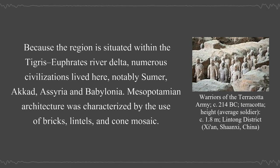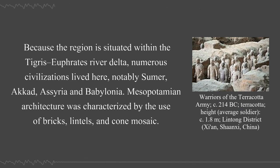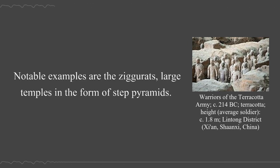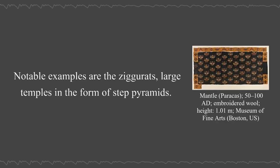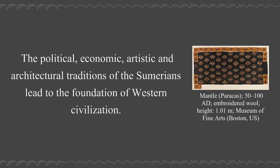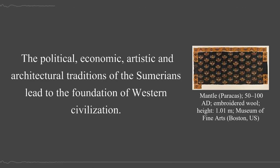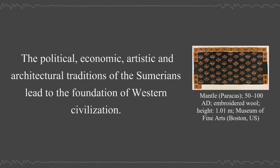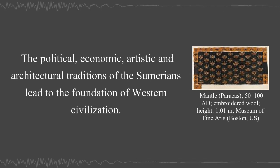Mesopotamian architecture was characterized by the use of bricks, lintels, and cone mosaic. Notable examples are the ziggurats, large temples in the form of stepped pyramids. The political, economic, artistic, and architectural traditions of the Sumerians lead to the foundation of western civilization.